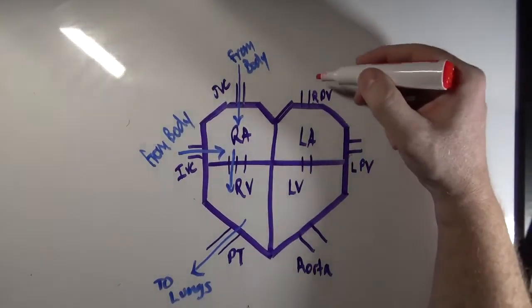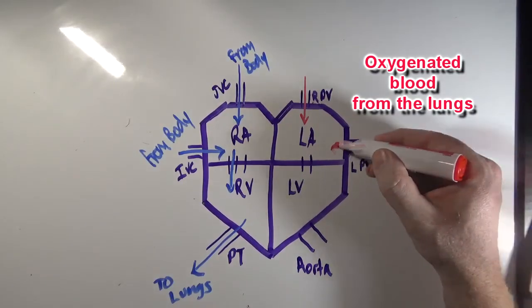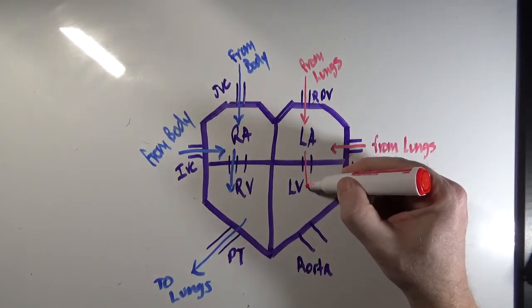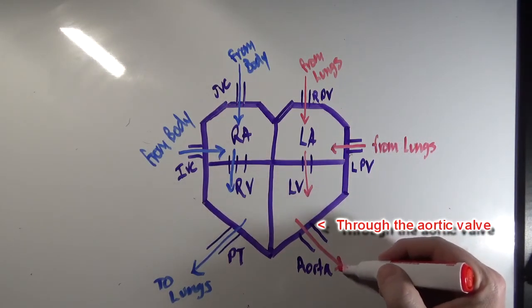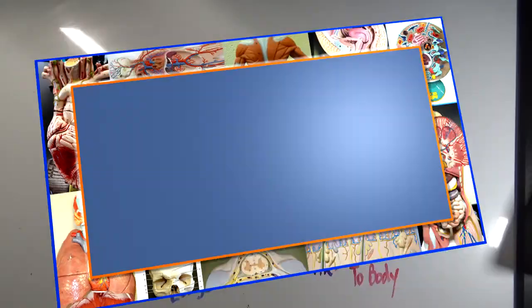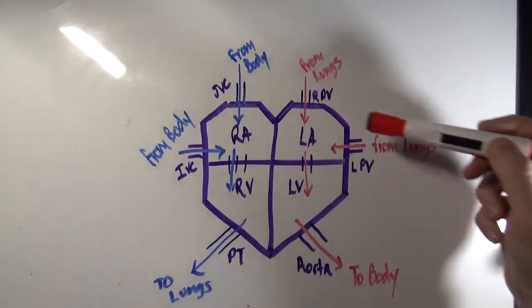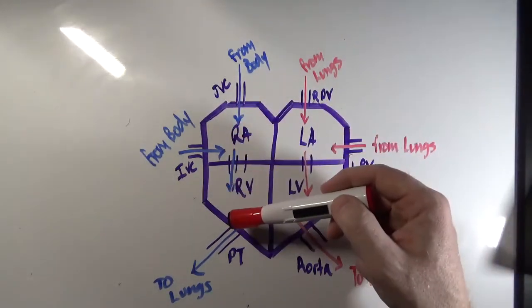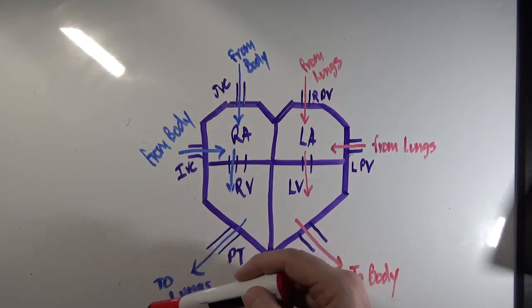The left side of the heart — specifically the left atrium — will collect oxygenated blood from the lungs. From the left atrium, oxygenated blood passes through the bicuspid valve into the left ventricle, and then out through the aorta to the body. As you can see, the heart acts like two pumps: one pump collects oxygenated blood from the lungs and sends it to the body, and the other collects deoxygenated blood from the body and pumps it to the lungs to pick up oxygen.